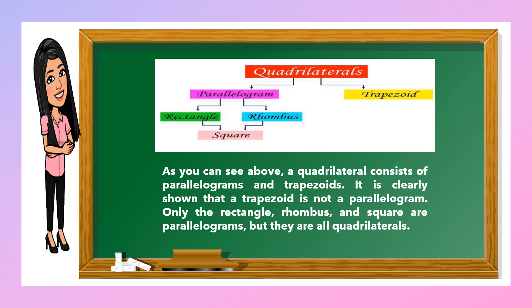A quadrilateral consists of parallelogram and trapezoid. It is clearly shown that a trapezoid is not a parallelogram. Only the rectangle, rhombus, and square are parallelograms, but they are all quadrilaterals. Ibig sabihin mga bata, lahat sila quadrilateral, pero si trapezoid ay hindi siya parallelogram. Ang parallelogram lang ay rectangle, rhombus, and square.